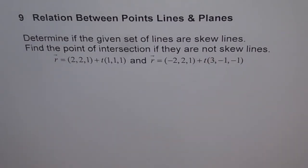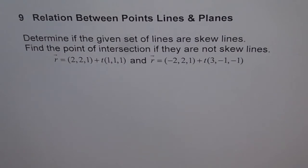What are skew lines? Skew lines are lines which are not parallel, but even then they don't intersect. Those are the lines which are skew lines — not parallel, but will not intersect also. That is only possible when they are in two different planes and the planes are parallel. So if the planes don't intersect, the lines in those planes will never intersect. That is how you get skew lines.